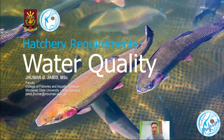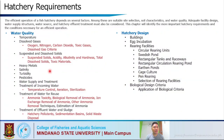To give you a short background on hatchery requirements: the efficient operation of a fish hatchery depends on several factors, one of which is water quality. Among these are suitable site selection, soil characteristics, and water quality. In this discussion we will be focusing our attention on water quality, namely the different physicochemical parameters that significantly affect the growth and development of our cultured species.